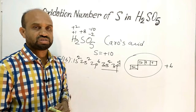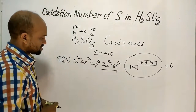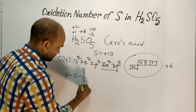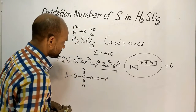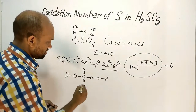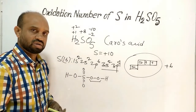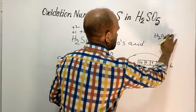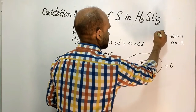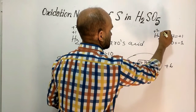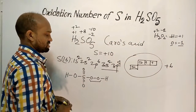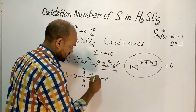Now let's find the actual oxidation number of sulfur. The structural formula of Caro's Acid is H₂SO₅. Here, two of the oxygen atoms form a peroxide group, similar to hydrogen peroxide. In the peroxide group, the oxidation number of hydrogen is plus 1 and oxygen is minus 1, meaning each of those two oxygen atoms accepted one electron.